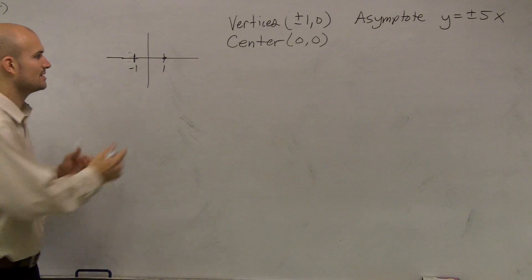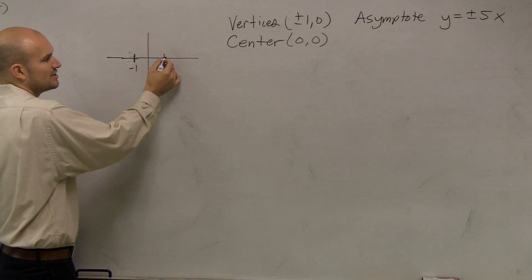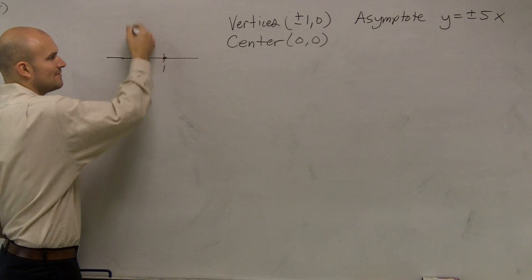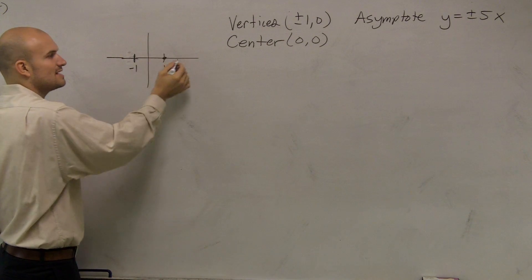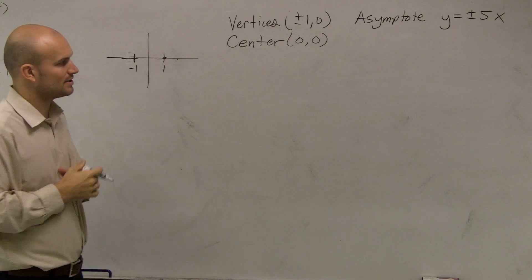They have to be horizontal because we can't, because remember, here are your vertices. Then you're going to have your foci. Well obviously, if you have your foci, they're all going to lie on the same axis. You can't have vertical hyperbolas.